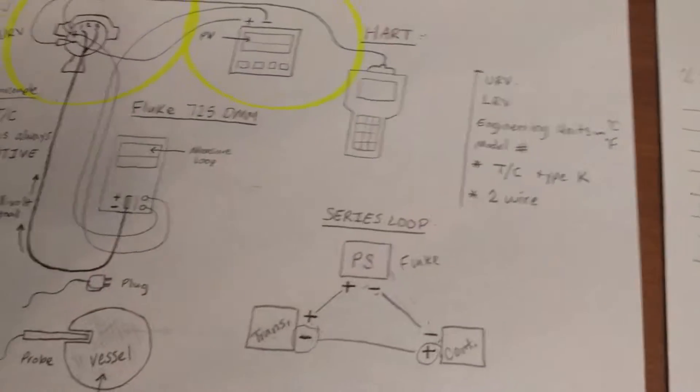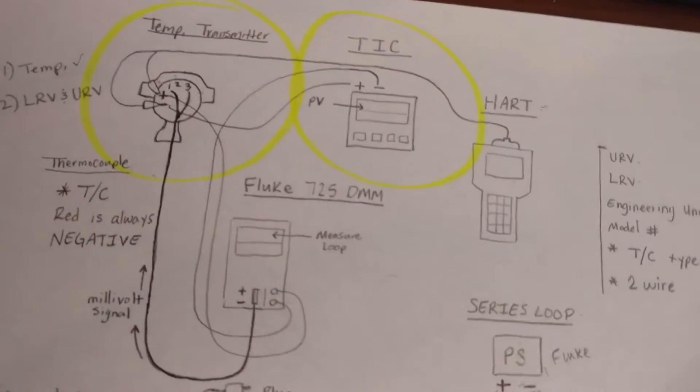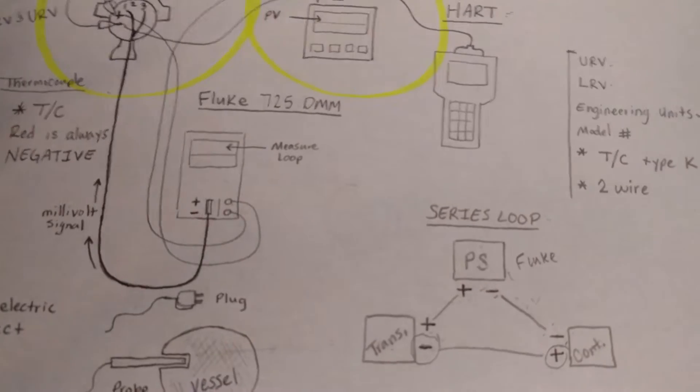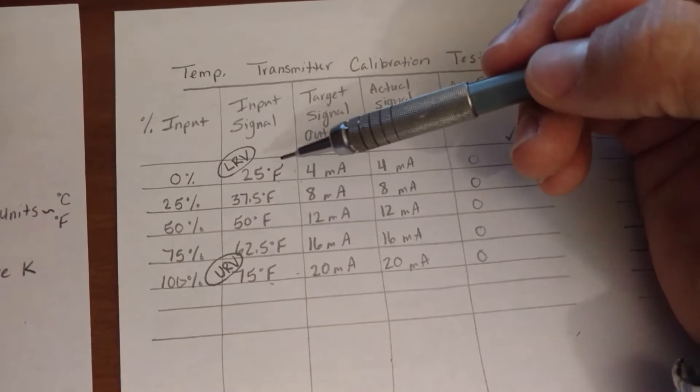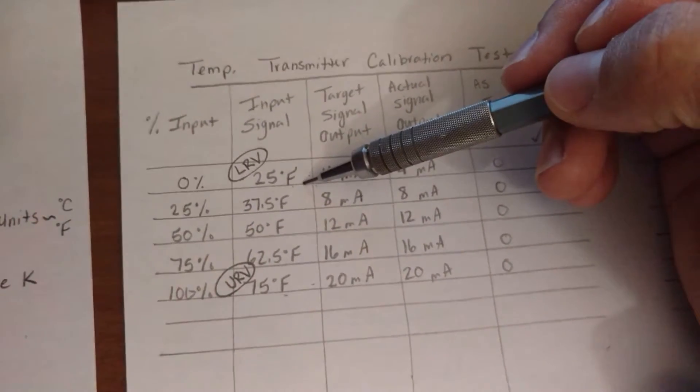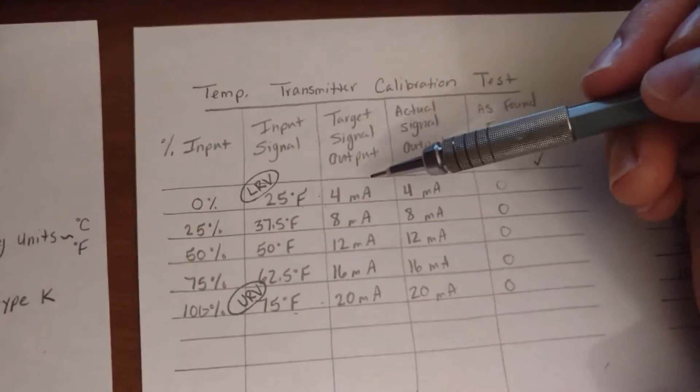So let's say we're testing our temperature transmitter and we say, okay let's test to make sure that at 0%, at our lower range value, that we're getting the desired amount of signal which should be 4 milliamps.